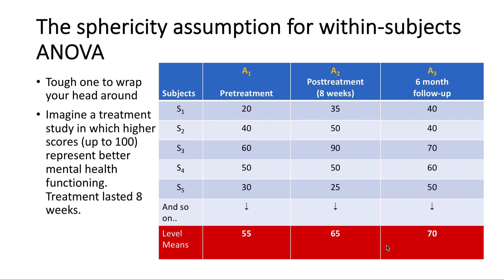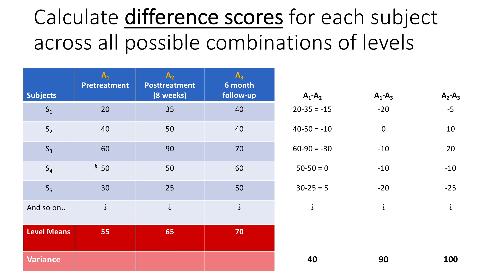We're seeing increases, but they could be random fluctuations — we won't know until we run the F-ratio. So there are our data. We can have a whole bunch of subjects, though I haven't put all the data in here. These are the means we ended up with if we were looking at all of the data. So how does the sphericity assumption work? Let's go back to our data set. What we're going to do to evaluate the sphericity assumption is to calculate difference scores for each subject across all possible combinations of levels.